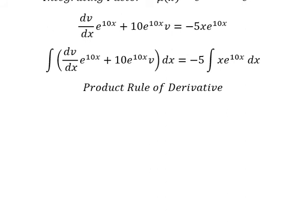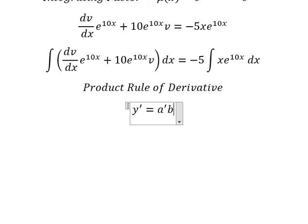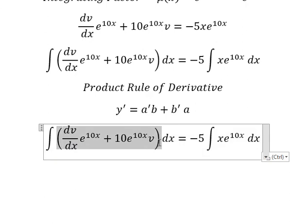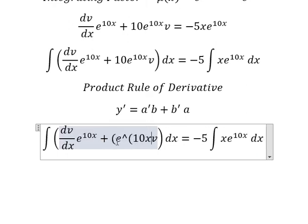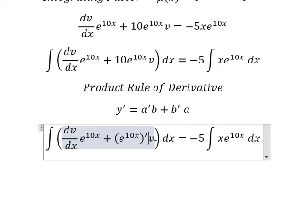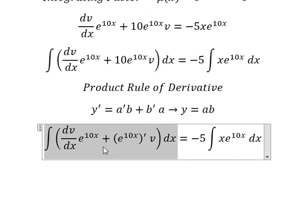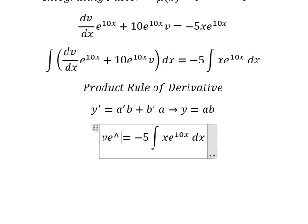We can use the product rule of the derivative. The first derivative of y equals the first derivative of a multiplied by b, plus the first derivative of b multiplied by a. So integrating this gives y equals a times b, which here gives v times e to the power of 10x.